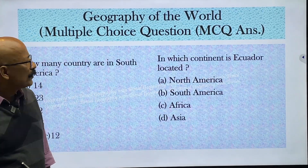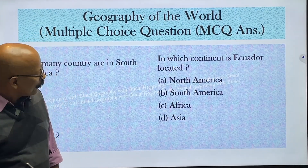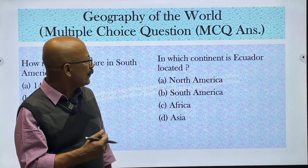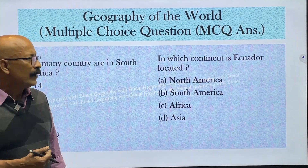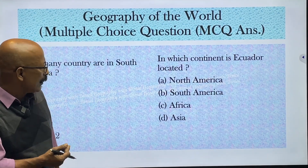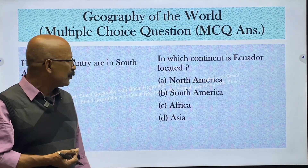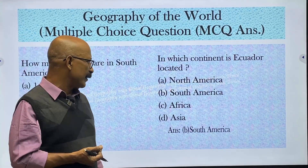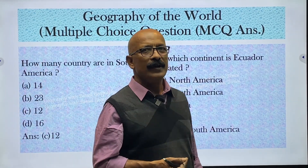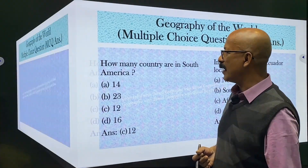In which continent is the Equator located? Options are North America, South America, Africa, and Asia. The answer is South America. And Titicaca and the Equator — all are in South America.